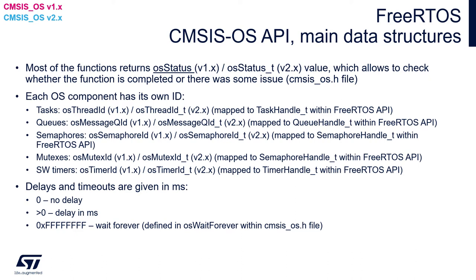The next important point concerns delays and timeouts. Like in the STM32 Hardware Abstraction Layer, all delays and timeouts are given in milliseconds. Zero means no delay; any value above zero is always in milliseconds. If you would like to wait continuously — wait forever — you need to specify all ones within 32 bits, which is defined as osWaitForever within the cmsis_os.h file.